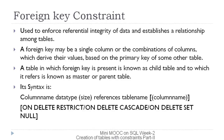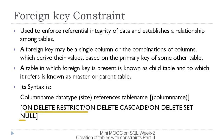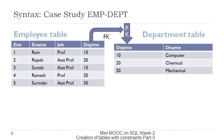That is why department number of the employee table is called a foreign key. A foreign key is used to enforce referential integrity of data, and it derives its value based on the primary key of some other table. The table to which it refers is known as the master or parent table, and the table in which the foreign key is present is known as the child table. Its syntax is: column name, data type, size, REFERENCES table_name (column_name). We can also specify ON DELETE RESTRICT, ON DELETE CASCADE, or ON DELETE SET NULL during creation of the foreign key.